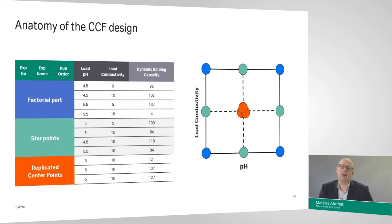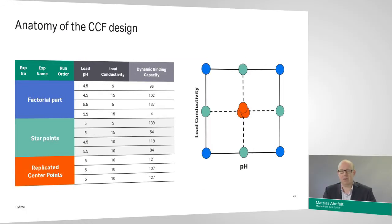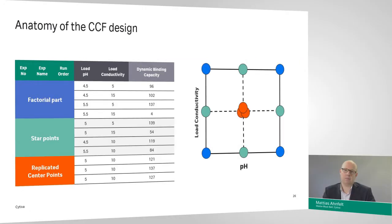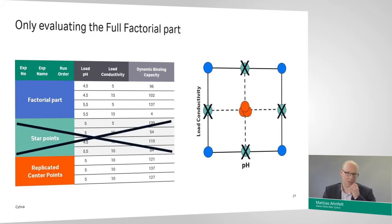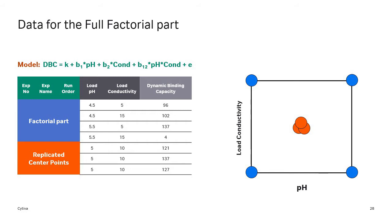In the application note you'll see that what was employed was a central composite face-centered design. The actual raw data is available in the application note as well if you'd like to plug this into your DOE software of choice. So, the anatomy of the CCF design, the central composite face-centered, looks like this. We have a four experiment factorial part. Those would be the purple corners of this design in pH and conductivity. We have three red center points at the middle, and we have the four green star points that add the ability to detect second degree curvature.